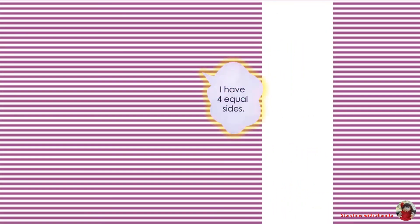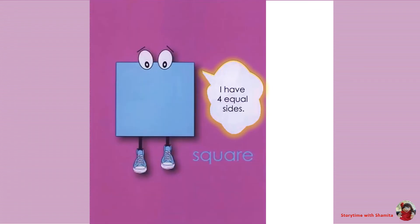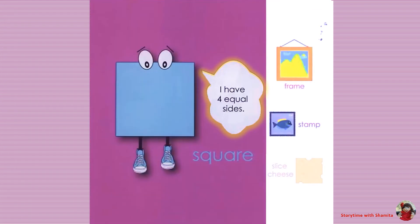I have four equal sides. Square. Examples: frame, spam, slice tree.